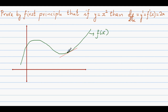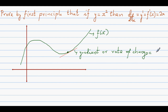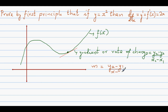Basically we want to find the gradient of this tangent line. Gradient means rate of change. Rate of change, or gradient, is rise over run, which is y2 minus y1 over x2 minus x1. This is the basic formula for gradient. So m, which is gradient, equals y2 minus y1 over x2 minus x1.